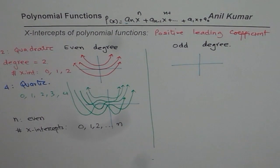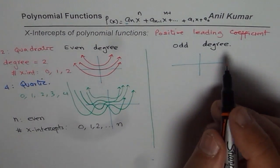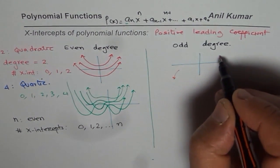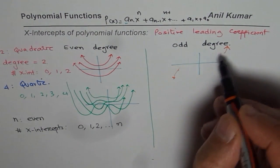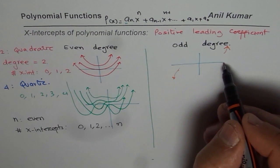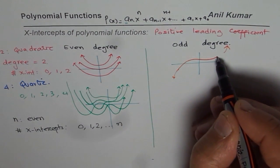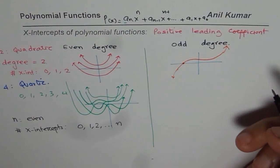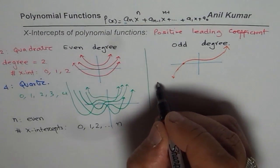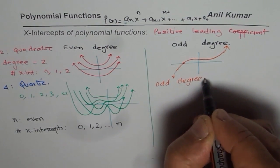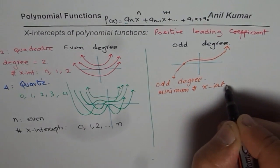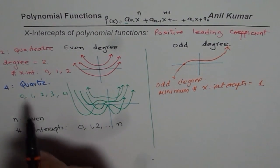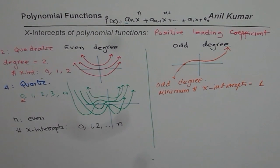Now let us consider odd degree polynomials. For an odd degree polynomial the end behavior goes from quadrant 3 to quadrant 1 when considering a positive leading coefficient. If you have to go from quadrant 3 to quadrant 1, you must definitely cross the x-axis, so there will be at least one x-intercept. For odd degree polynomials, the minimum number of x-intercepts equals 1, whereas for even degree we saw it was 0.